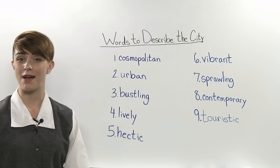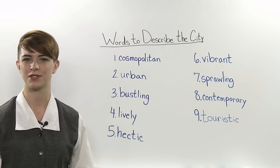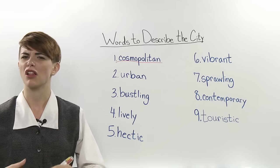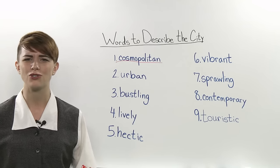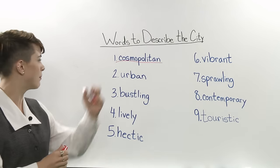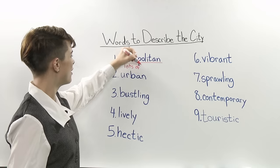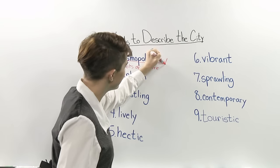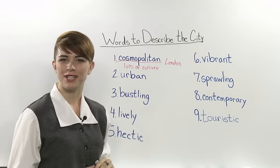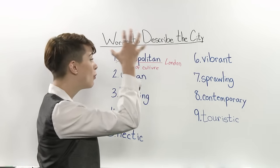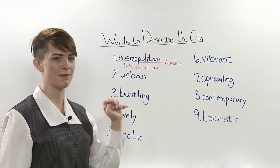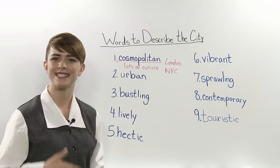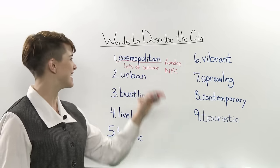First, let's focus on some vocabulary we can use to talk about cities. What makes a city unique? What makes it interesting? First on our list, we have 'cosmopolitan.' Cosmopolitan means there are a lot of people from all over the world — lots of culture, lots of food, lots of music, all in one city. An example of a city that is very cosmopolitan is London. When you are in London, you can get food from Italy, Vietnam, China, India, all within London. Another example would be New York City, which is very cosmopolitan because it has a Chinatown and a Little Italy right next to each other.